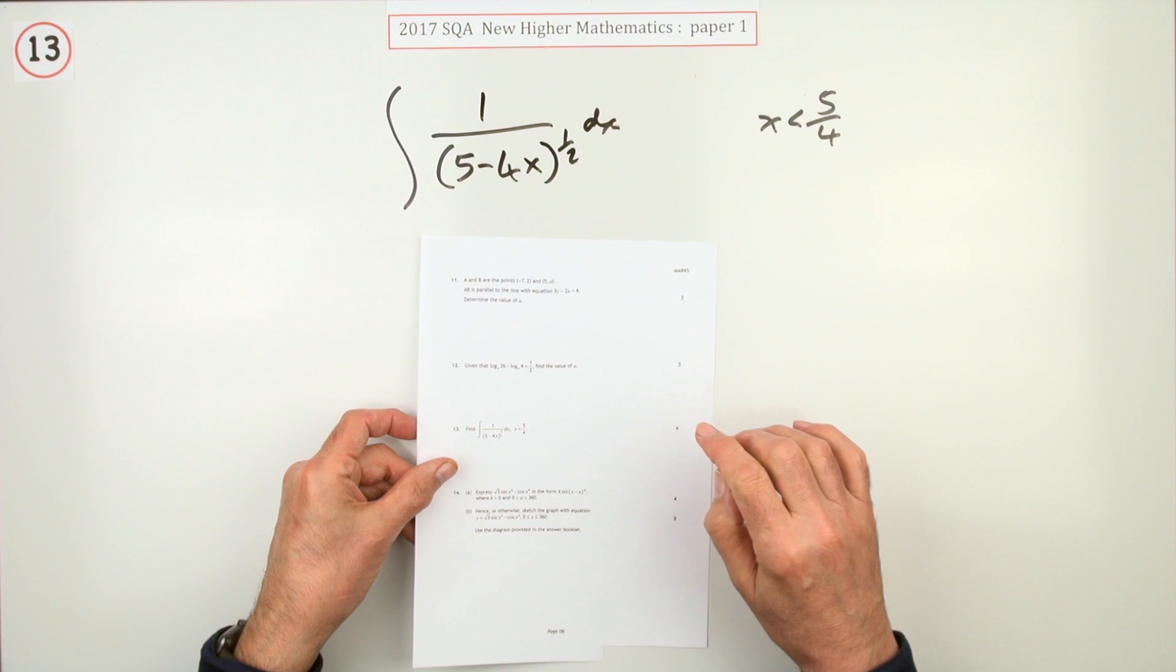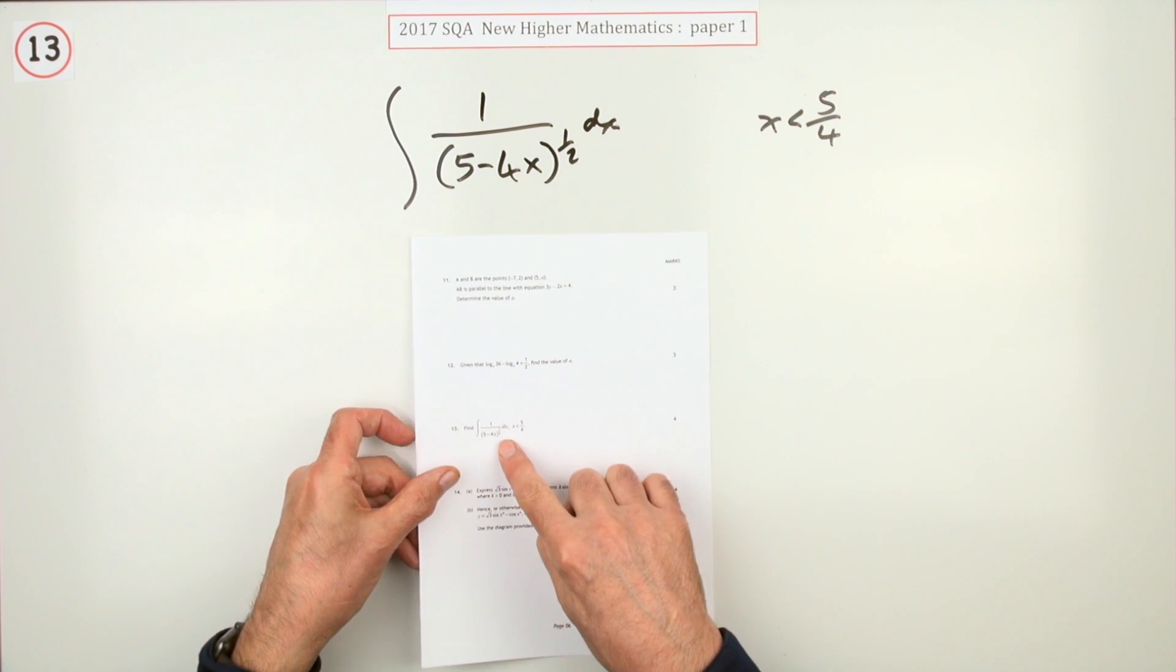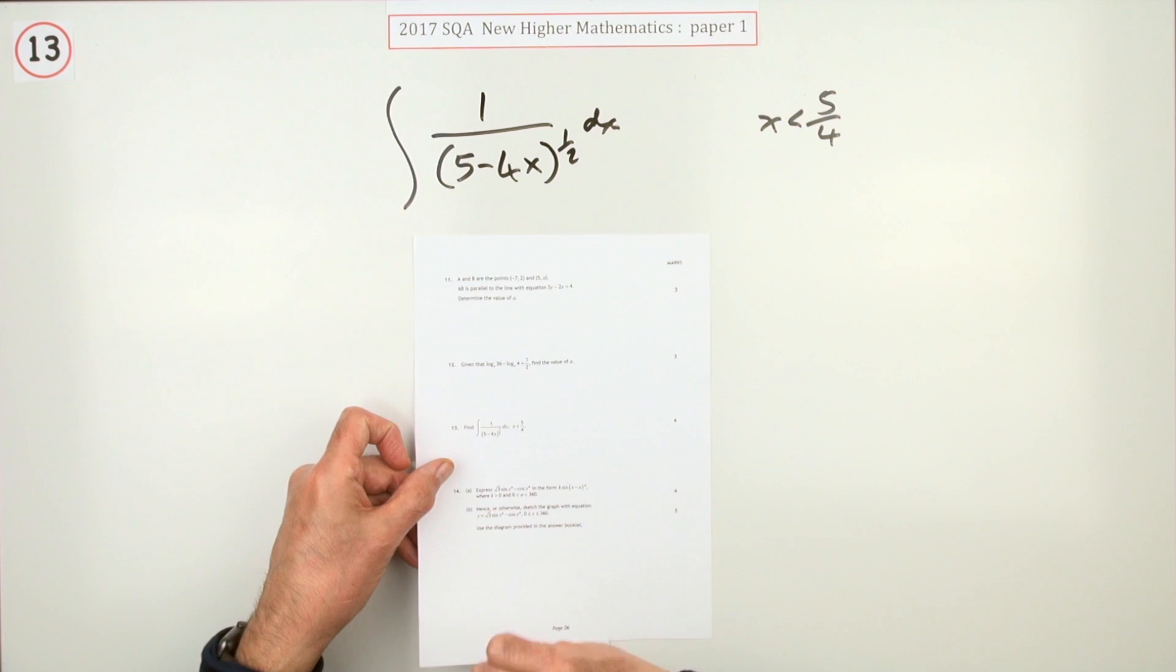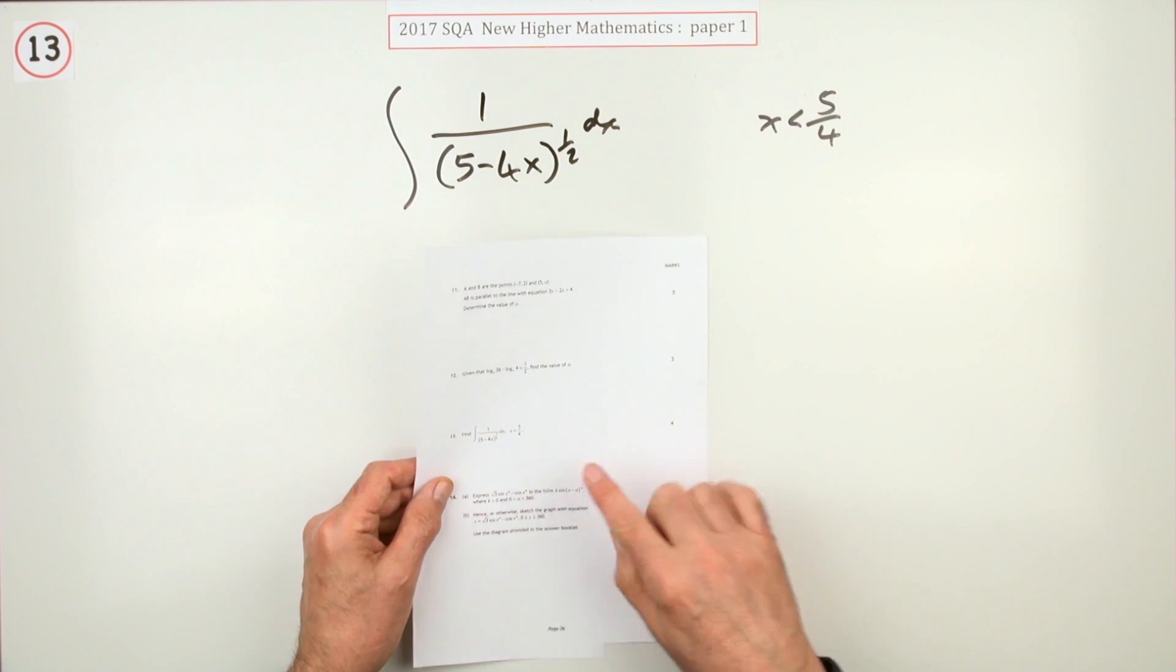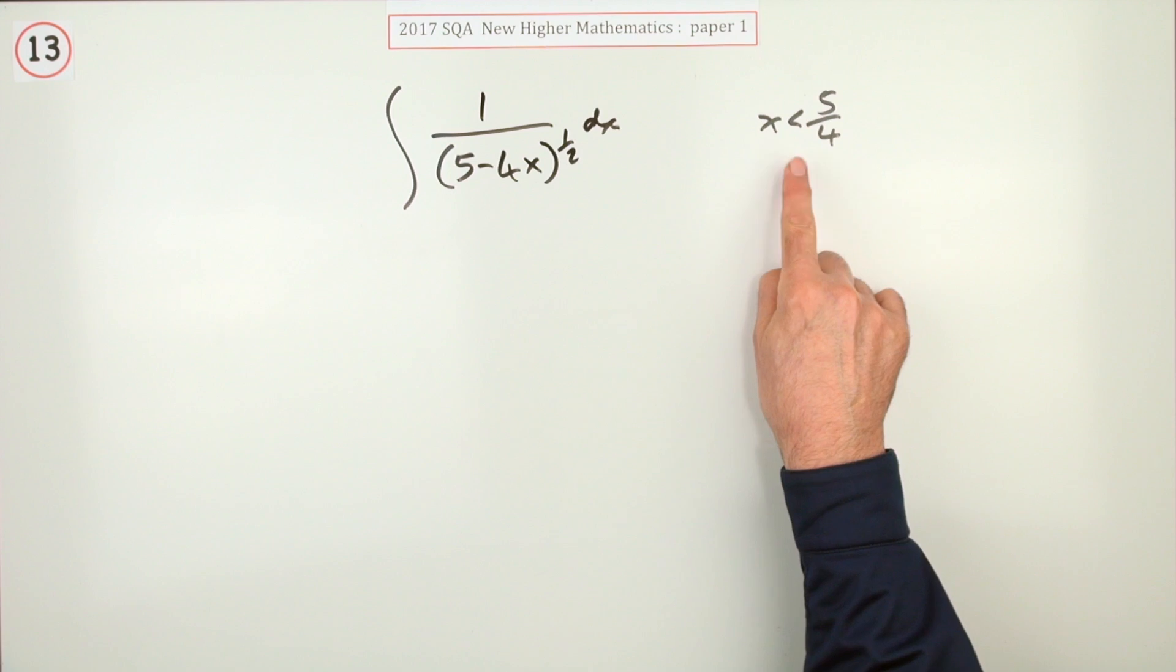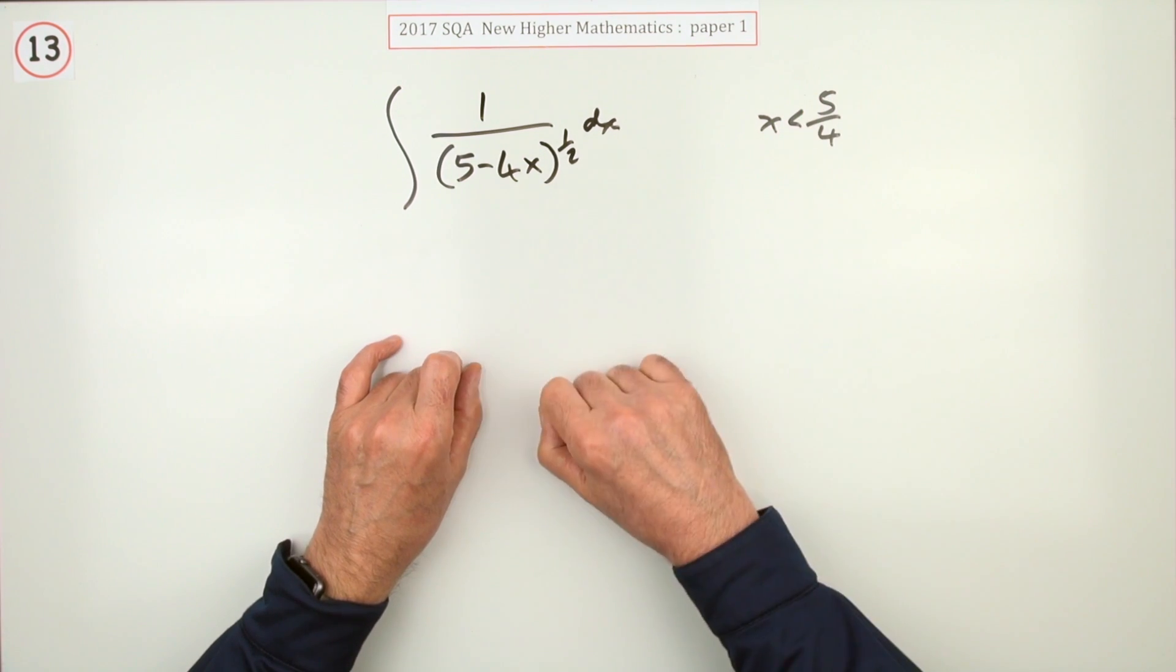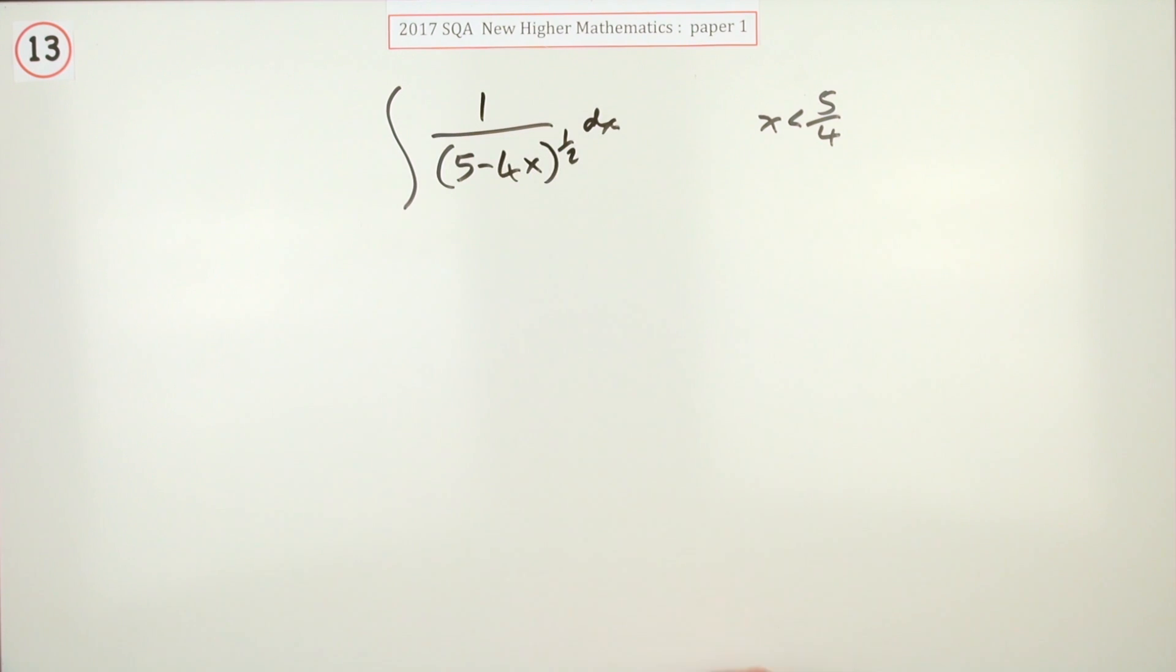Number 13 from paper one of the 2017 Higher. Here we go, it's an integration for four marks. It's not actually an awful lot to do here. You don't even have to evaluate it, it's an indefinite integral. There's a little bit at the side, x is less than five over four, but that's just a little disclaimer so that you don't try and put either a negative into a square root or zero into the base of a fraction.